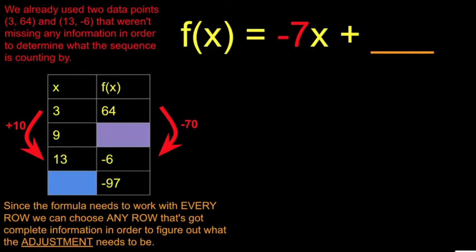Since the formula needs to work with every row, we can choose any row that's got complete information in order to figure out what the adjustment needs to be. Whatever this formula ends up being, we need it to work with row 1 and with row 2 and with row 3 and with row 4. That's the whole point of a formula. It works with every row. So I can choose any one row that has complete information. I can choose this top row or I can choose this third row.